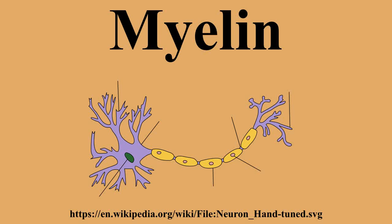The main purpose of a myelin layer is to increase the speed at which impulses propagate along the myelinated fiber. Along unmyelinated fibers, impulses move continuously as waves, but in myelinated fibers, they hop or propagate by saltatory conduction.